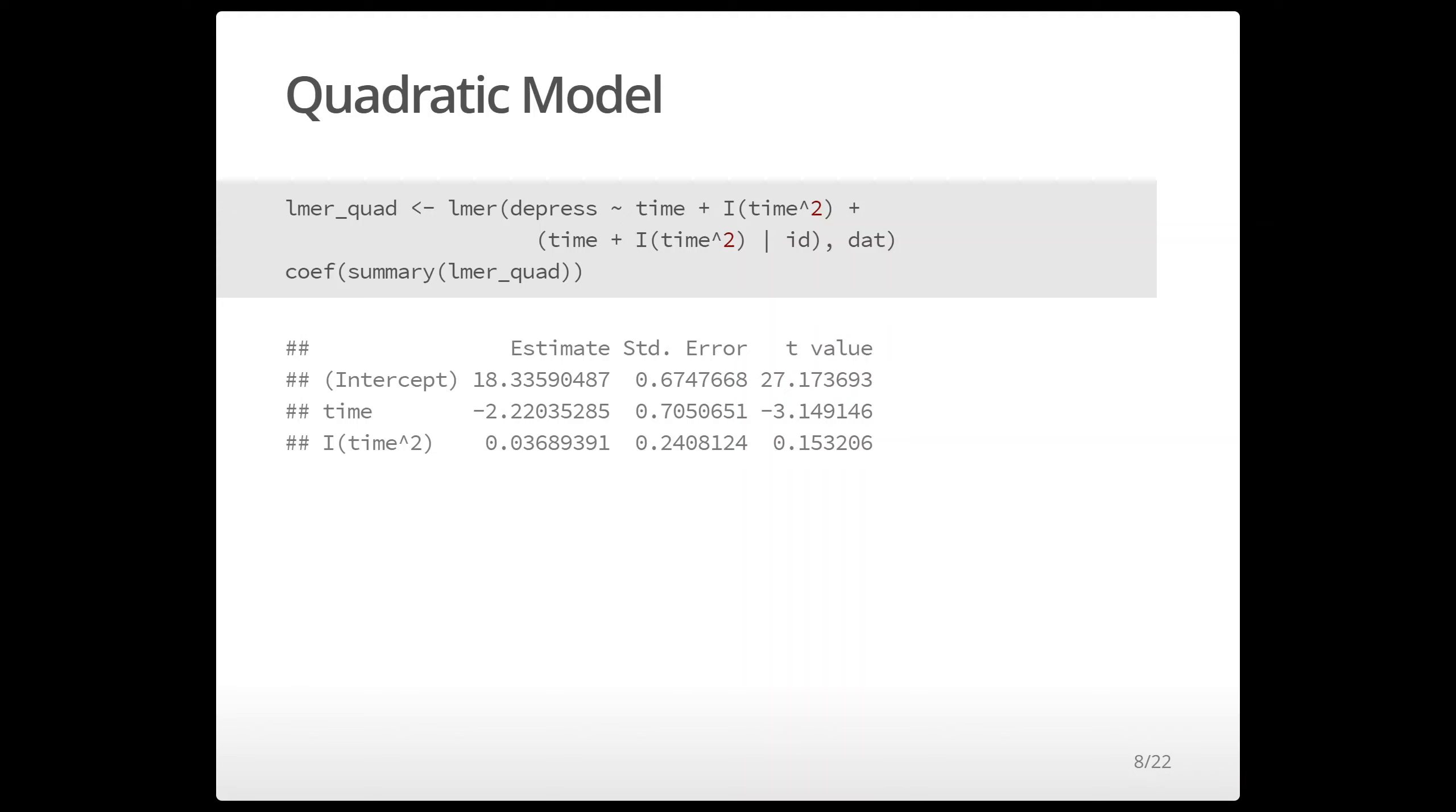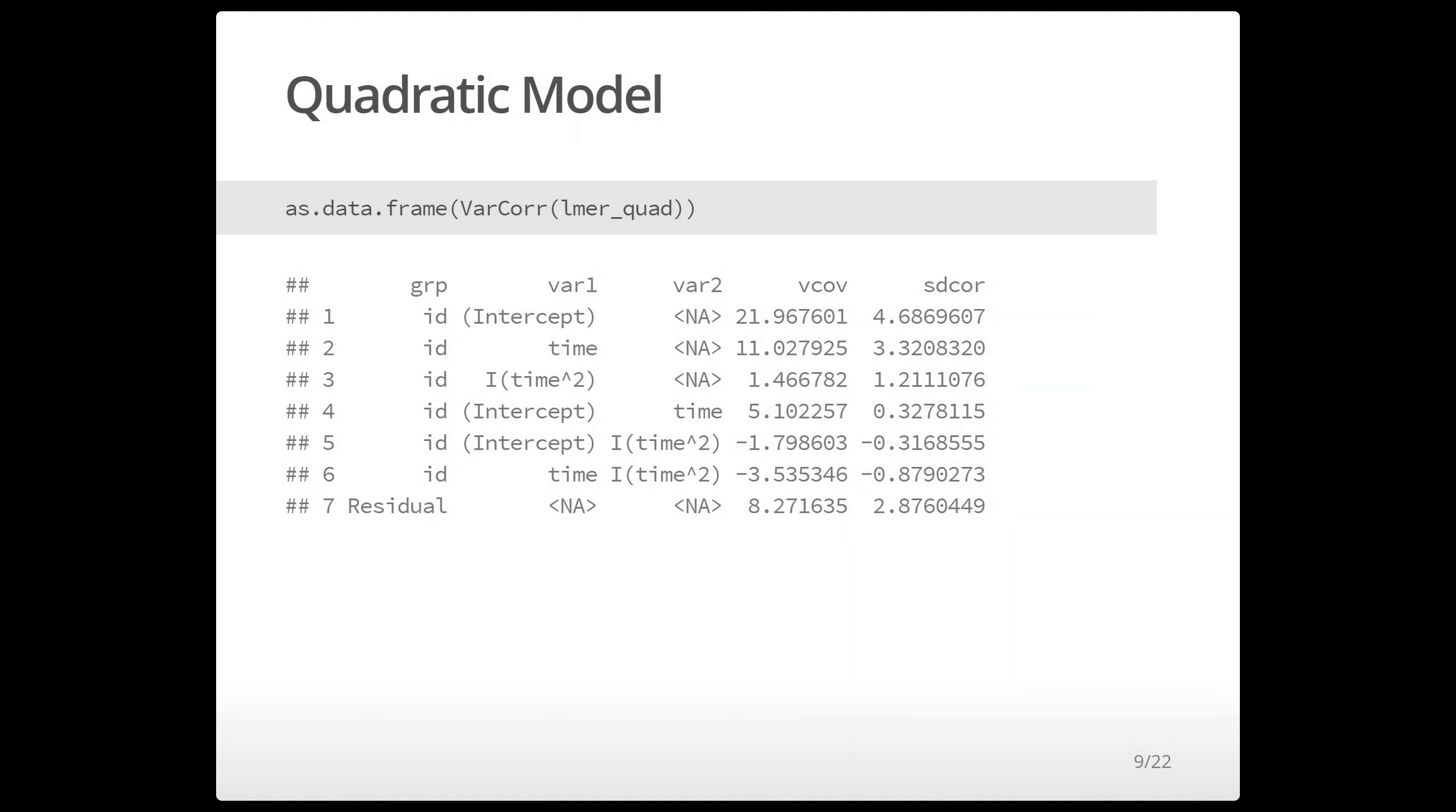And here is the result I get. Keep in mind here this actual fixed effect of time squared is not significant here but something worth bearing in mind for something we're going to see in a little bit. And here again are our random effects and note that we have correlations for all of our random effects as we expect including between time and time squared.